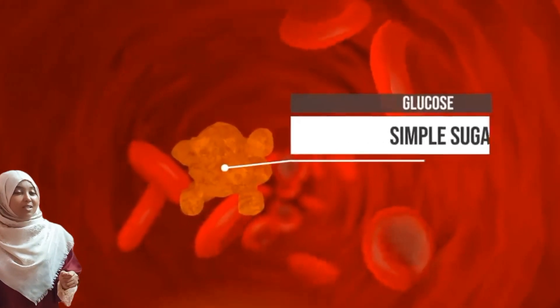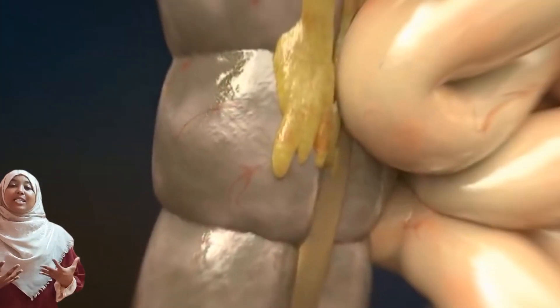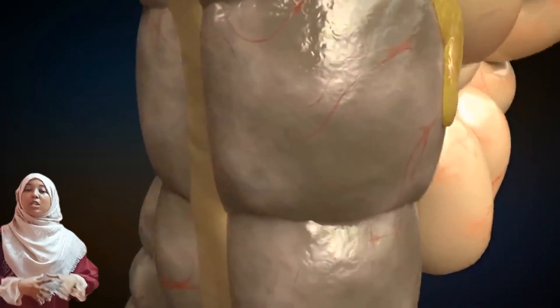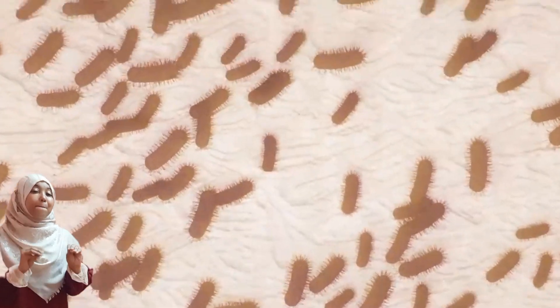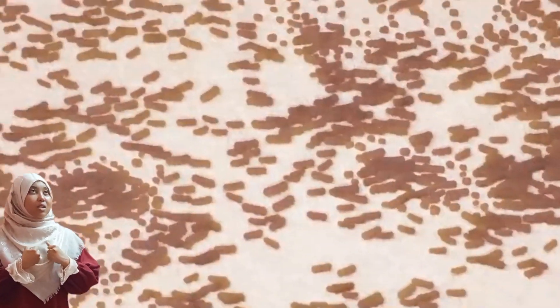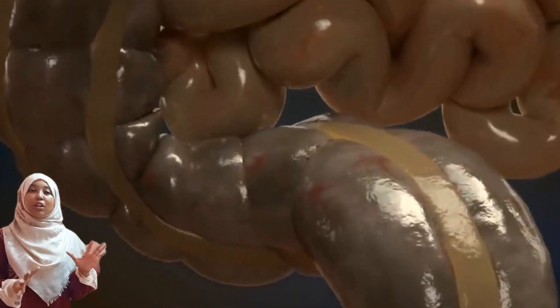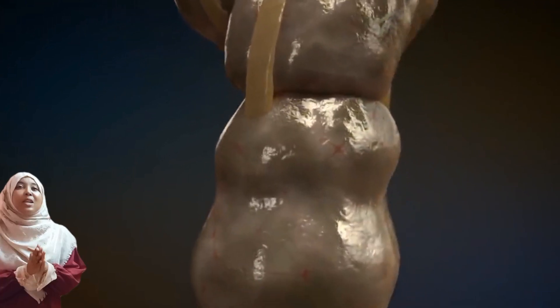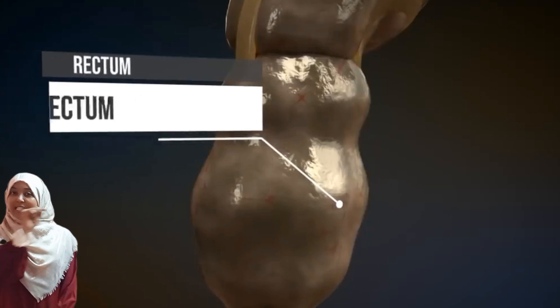At this point, absorption takes place — food substances move into surrounding blood vessels to be transported throughout the body for assimilation by various cells. Whatever remains moves to the large intestine, also referred to as the colon, which is long and wide to facilitate absorption of water and mineral salts. The large intestine also contains symbiotic bacteria that manufacture vitamin K, most of which is absorbed by the host. Food then passes into the rectum — a temporary storage area for feces — and out through the anus.